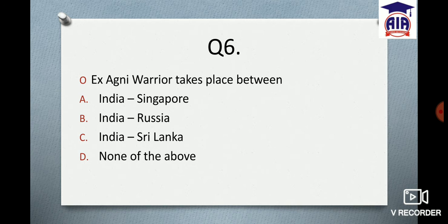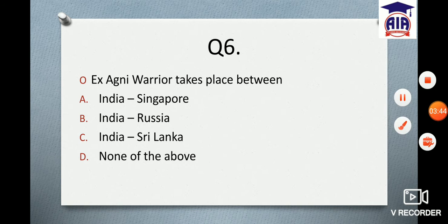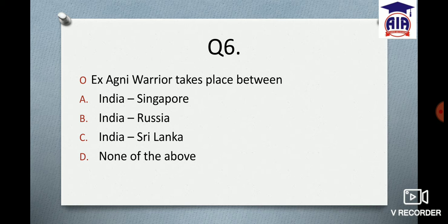Next question: Exercise Agni Warrior takes place between which countries? Option A: India–Singapore. Option B: India–Russia. Option C: India–Sri Lanka. Option D: None of the above. This question comes from what we covered. Focus on quality topics: economics, military exercises, environment, conventions, map locations, and reports. Try your revision.